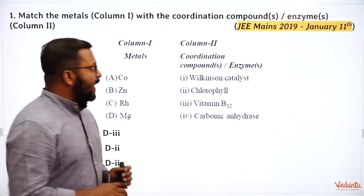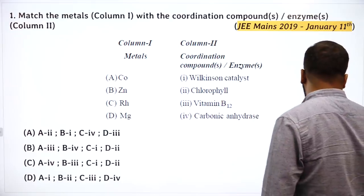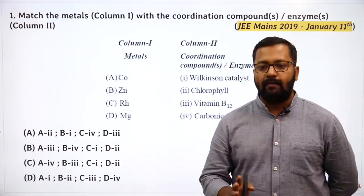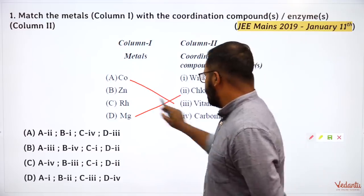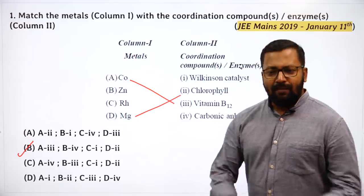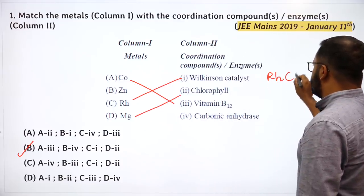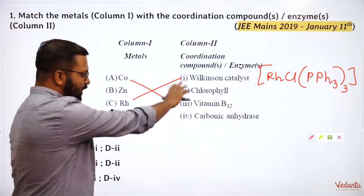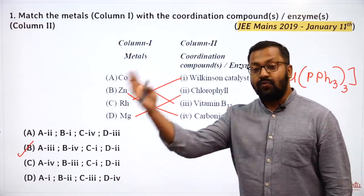The first question asks us to match metals with coordination compounds of enzymes given in column 2. We follow the method of elimination — start with chlorophyll and vitamin B12. Chlorophyll contains magnesium and vitamin B12 contains cobalt because vitamin B12 is known as cyanocobalamin. So chlorophyll matches with magnesium and vitamin B12 with cobalt, giving A→3, D→2. The right answer is B. Wilkinson's catalyst matches with rhodium — Wilkinson's catalyst is RhCl(PPh₃)₃. You do not need to know the formula for carbonic anhydrase, but it contains zinc. With this, we solve the first question.